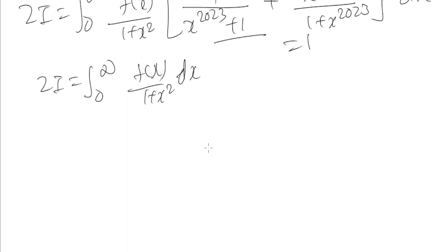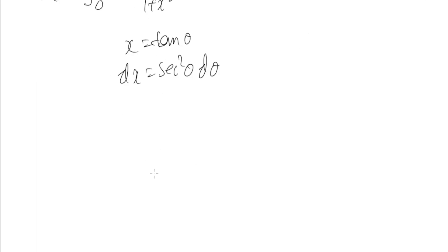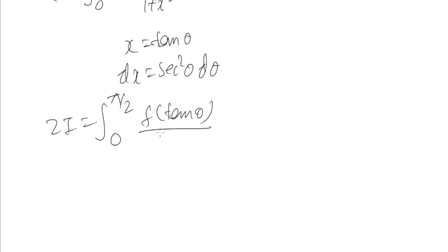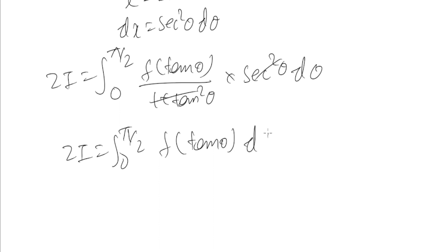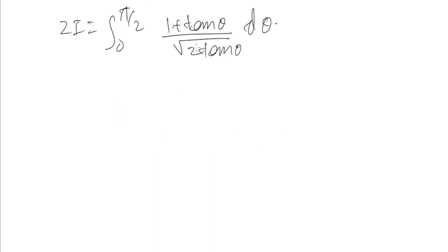Now we substitute x equal to tan θ. We get dx equal to sec² θ dθ, and the limits become 0 to π/2. So 2I equals the integral from 0 to π/2 of f(tan θ) over (1 + tan² θ) times sec² θ dθ. We can cancel (1 + tan² θ) with sec² θ, leaving 2I equal to the integral from 0 to π/2 of f(tan θ) dθ.